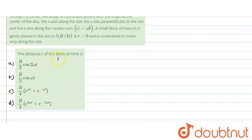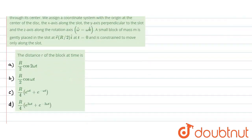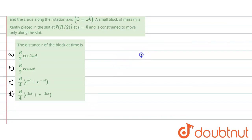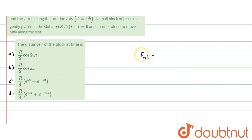We need to find the distance of the block at time t. Since the particle is constrained to move only along the slot, there would be a centripetal force. The block is smooth so there is no friction. The normal reaction forces from both surfaces of the slot cancel each other. The weight is balanced by the normal reaction in the upward direction. The sideways normal reactions N1 and N2 are equal and opposite, so only centripetal acceleration acts.